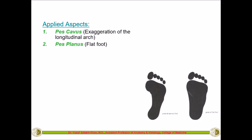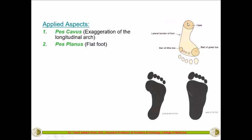Looking at foot impressions: the normal foot shows impression from the ball of the first and fifth metatarsal heads plus the heel. In flat foot, the whole foot gives the impression because the arch has come down and almost the entire sole touches the floor. Pes cavus is the opposite — a very high arch foot. The third condition is claw foot.